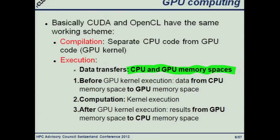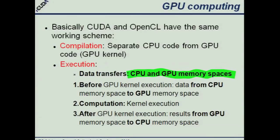How should we program GPUs? We have two different stages: the compilation stage and the execution stage. In the compilation stage, we take the program — which will have code for the GPU and code for the CPU — and we separate those codes. Then when we execute the code, we start executing in the CPU, then transfer the kernels containing the GPU code to the GPU, then transfer the data. Once we transfer the data, we execute the kernel on the GPU, and then we transfer back the data from the GPU to the CPU.